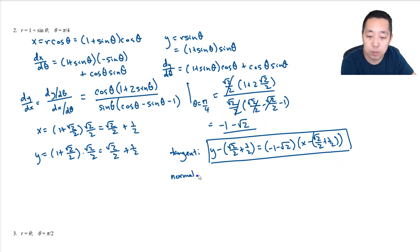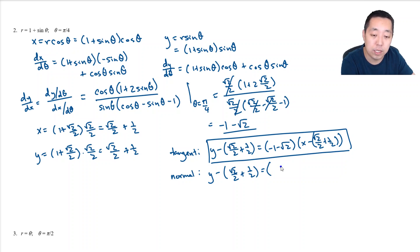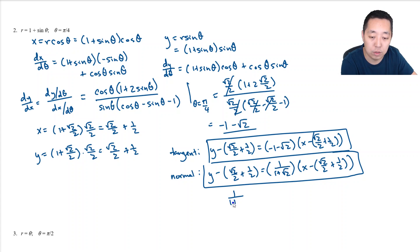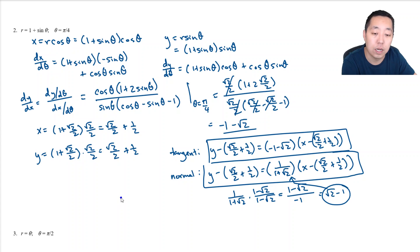The normal line uses the same point, but the slope becomes the negative reciprocal: y minus (root 2 over 2 plus 1 half) equals (1 over (1 plus root 2)) times (x minus (root 2 over 2 plus 1 half)). To rationalize the denominator, multiply by the conjugate — 1 minus root 2 over (1 minus 2) equals 1 minus root 2 over negative 1 — so the slope becomes root 2 minus 1. You could substitute root 2 minus 1 into the normal line equation.